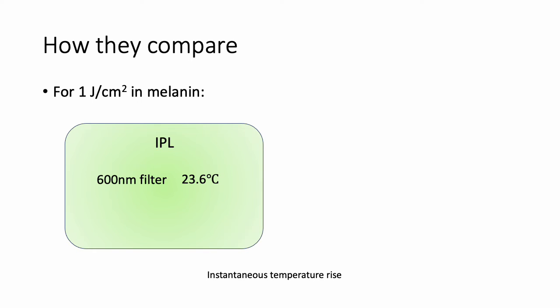How do these compare? For a 1 joule per square centimeter fluence into melanin, if we use a 600 nanometer filter on an IPL system, the instantaneous temperature rise would be about 23.6 degrees Celsius — assuming no heat losses during the pulse, so we're talking about an extremely short pulse, approximately 0 milliseconds. A 530 nanometer filter, typically used for blood vessels, will generate a temperature of around 36.7 degrees Celsius. The lower 480 nanometer filter, usually used for acne and pigmentation, will generate 52 degrees Celsius. All these use 1 joule per square centimeter — all we're changing is the filter, and as the filter value decreases, more energy gets through to the skin.